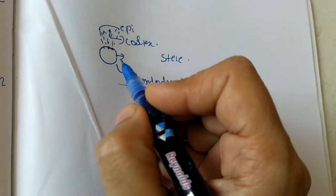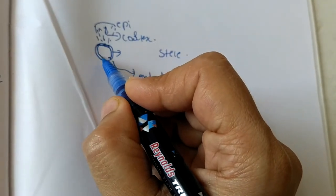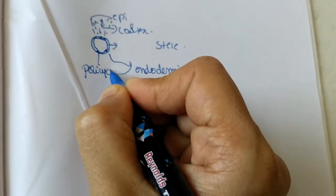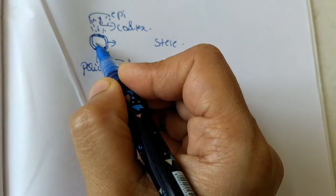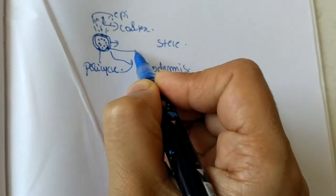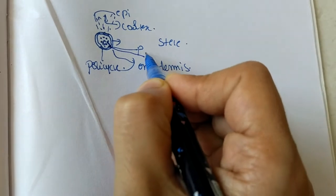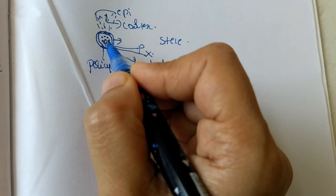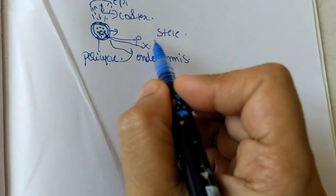What we have inside this endodermis is another layer called pericycle. Inside pericycle what is present is phloem. We consider these dots as phloem. Inside phloem we have xylem, and there are chances there may be presence of pith or absence of pith in the center of this core. So this entire structure is nothing but a steel.